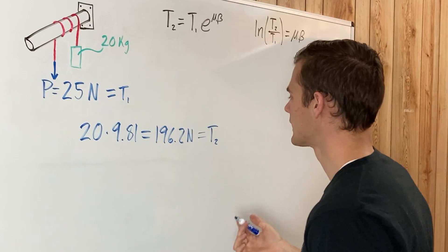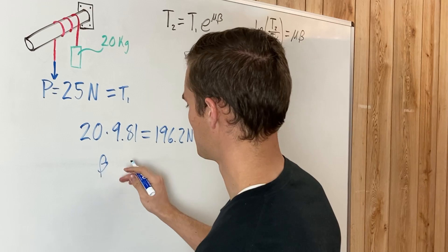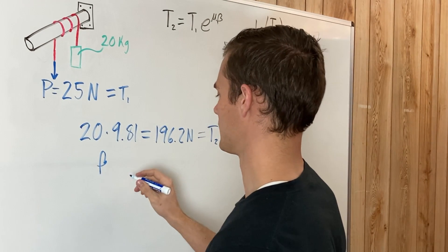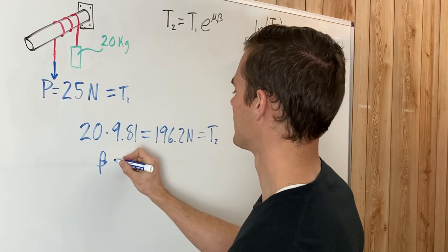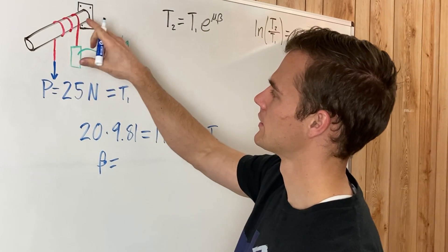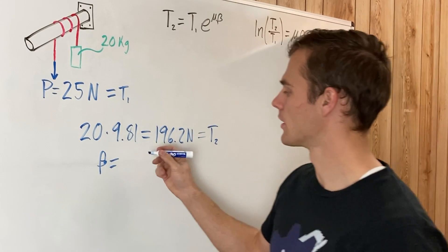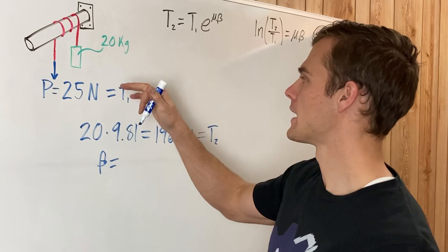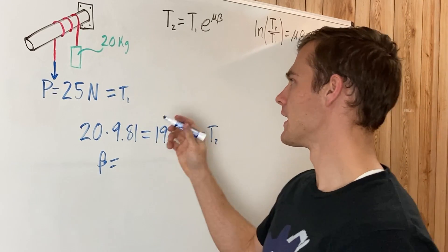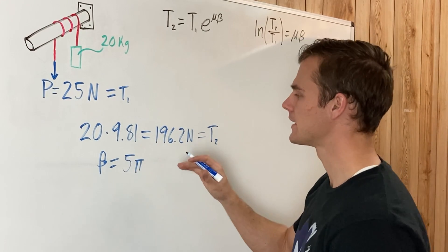Now the other thing we can label while we are figuring out variables. This is beta. But from the picture, we can tell that this rope is going around at two and a half times. And remember that beta is measured in radians. So two and a half revolutions would be 2.5 times by two pi. And that comes out to be five pi. So beta is five pi.